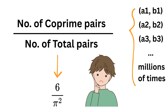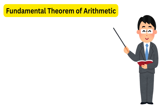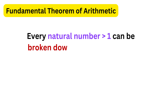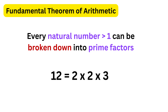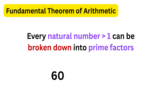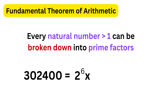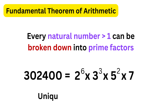Before we begin, here is the fundamental theorem of arithmetic we will need for this proof: every natural number greater than one can be broken down into prime factors. For example, 12 can be written as two times two times three, or two squared times three. Another example: 60 is two squared times three times five. A bigger number can be written as two to the sixth times three cubed times five squared times seven. This factorization is always unique for each number.